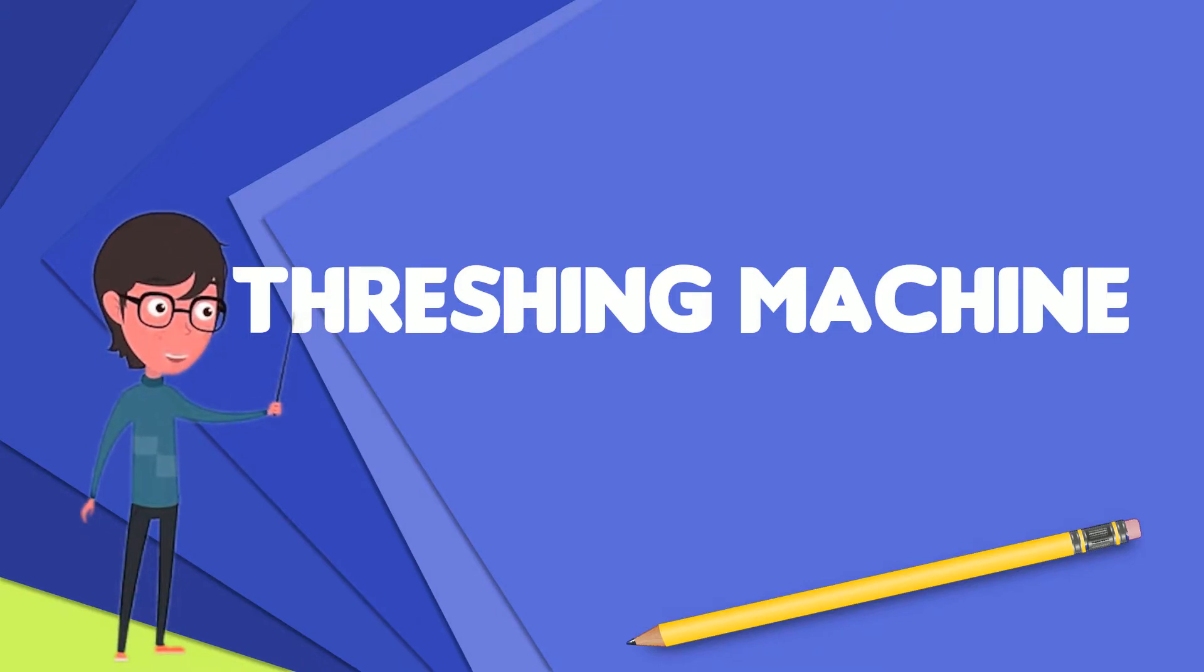Before such machines were developed, threshing was done by hand with flails. Such hand threshing was very laborious and time-consuming, taking about one-quarter of agricultural labor by the 18th century. Mechanization of this process removed a substantial amount of drudgery from farm labor.